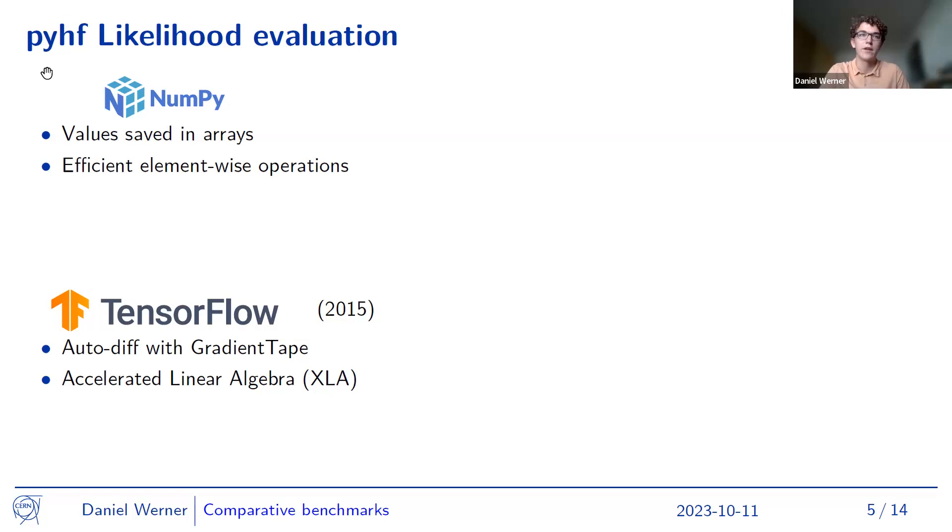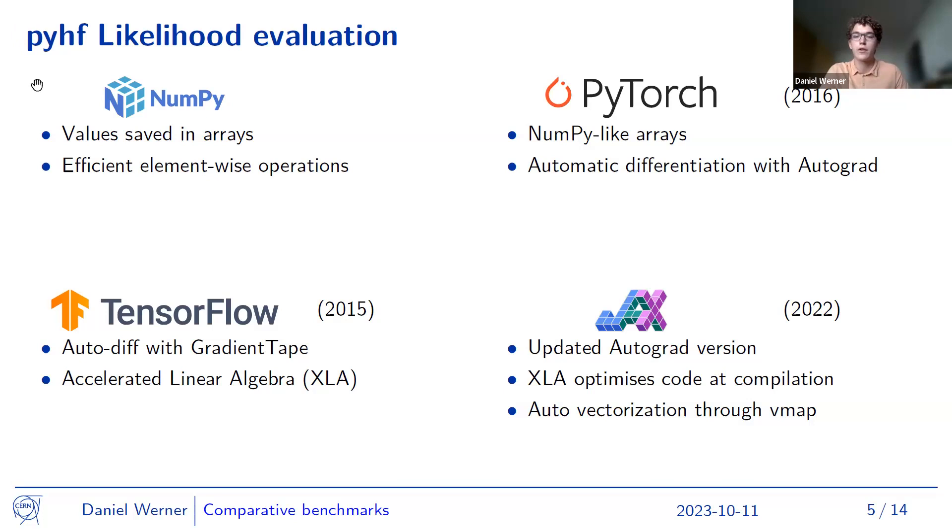Similarly, PyTorch as a machine learning framework can be used. It also has this NumPy-like arrays to allow some vectorization and it has automatic differentiation with autograd in this case. And the fourth and newest backend is JAX. So JAX contains an updated version of autograd for automatic differentiation. It also has this accelerated linear algebra or code optimization and some auto vectorization is possible to improve the performance.